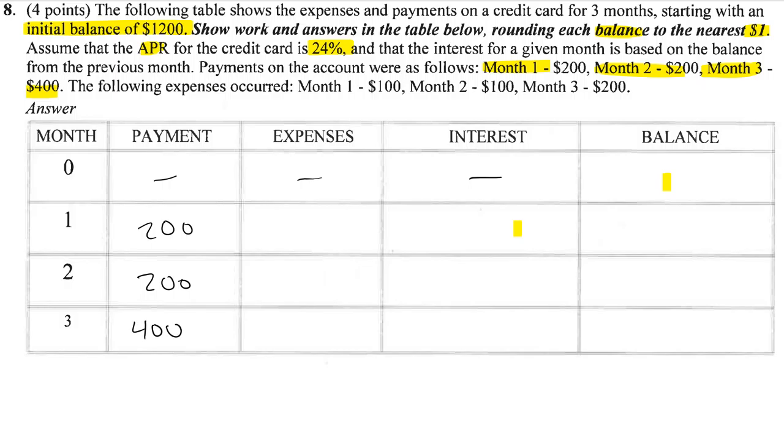The expenses are listed for each month. Let's fill that in. The first expense is $100, and the initial balance was $1,200.